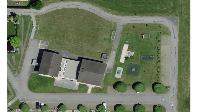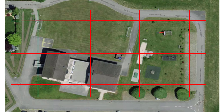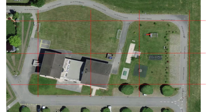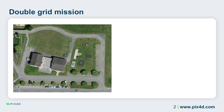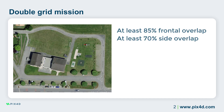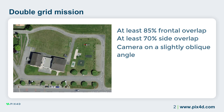The double grid mission is similar to a single grid mission, except you fly two sets of flight lines that are perpendicular to each other, and the camera is oriented at a slightly oblique angle. Due to the oblique angle, a double grid mission typically requires at least 85% frontal and 70% side overlap. The camera should be oriented at a slightly oblique angle relative to the ground to ensure you generate a more comprehensive 3D representation of your area of interest.